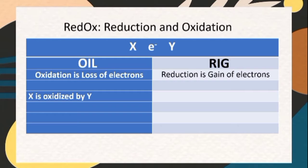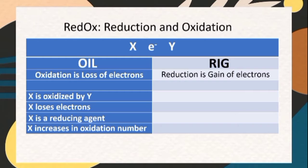In OIL, X is oxidized by Y. X loses electrons, X is a reducing agent, and X increases in oxidation number.